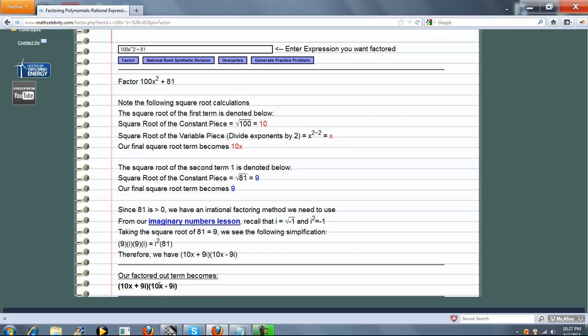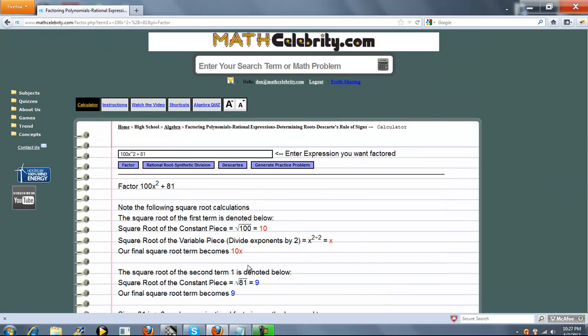If you take 10x times 10x, you get 100x squared, which is this. 9i times 10x minus 9i times 10x—they cancel each other out. Then the last piece: 9i times negative 9i is negative 81i squared. But i squared equals negative 1. So i squared equals negative 1 times negative 81—that's a positive 81. So that's the sum of cubes example.